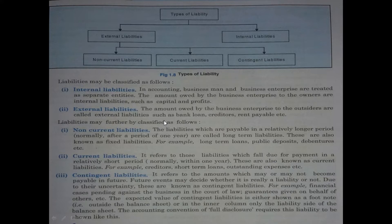Liabilities payable within one year are current liabilities or short-period liabilities. Non-current liabilities, also known as fixed liabilities, include long-term loans, public deposits, and debentures. Current liabilities fall due for payment in a relatively short period. Contingent liabilities refer to amounts which may or may not become payable in future — for example, a pending court case. Such liabilities are not shown on the balance sheet; instead, they are shown as a footnote below the balance sheet.